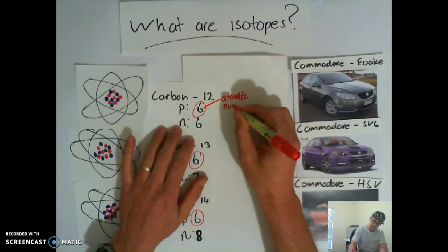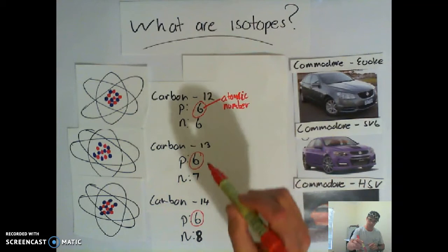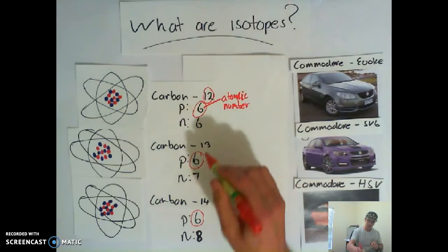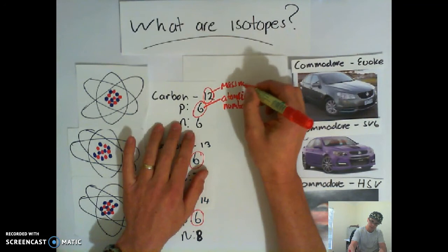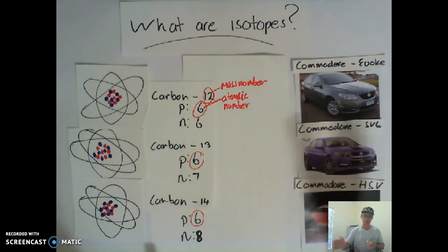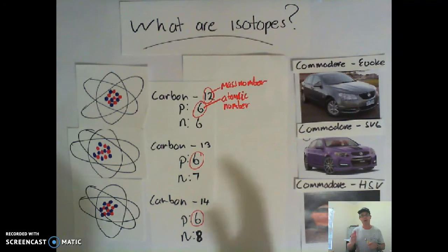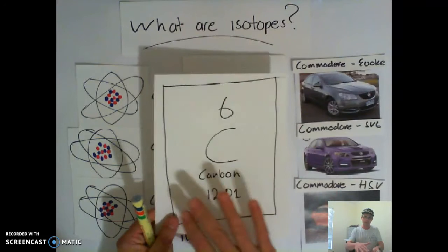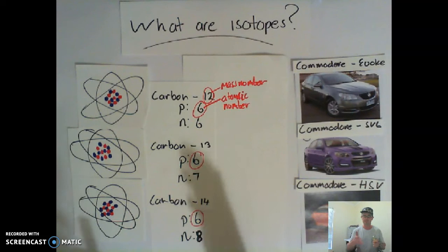Now let's have a look at these numbers. Protons — that's the atomic number. We've all got six, six, six. This number here — if we look at how we've written carbon-12, carbon-13, carbon-14 — this here is the mass number. And the mass number relates to how many protons and neutrons are in the nucleus. Remember, not just the neutrons — the protons and the neutrons. In one of the other videos, you would have seen me write down some atoms in isotope notation, not like what you see on the periodic table.